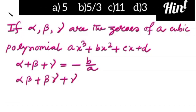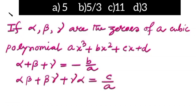Alpha beta plus beta gamma plus gamma alpha is equal to c by a, and alpha beta gamma is equal to minus d by a.